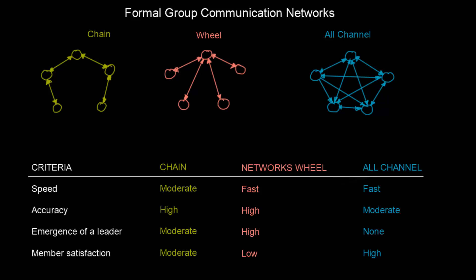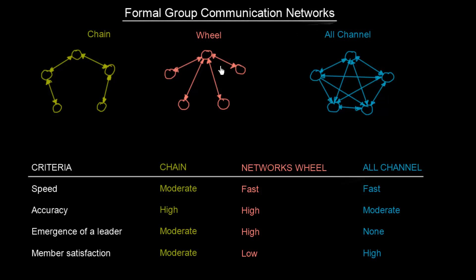When you come to any kind of organization, you are going to find some groups, and the members of these groups need to communicate together somehow. In this video, we will talk about how these groups are formally organized in order to communicate effectively, and we are going to talk about three different kinds of communication networks within organizations.